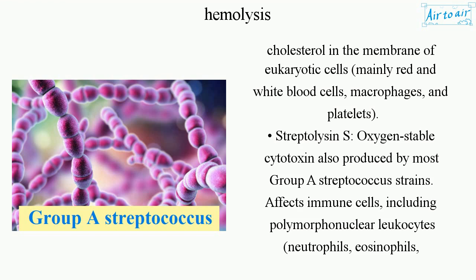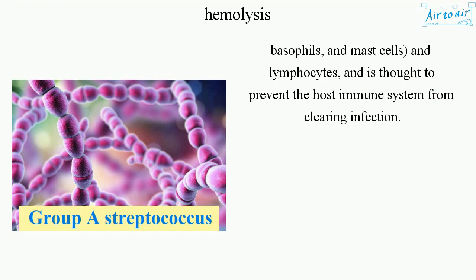Streptolysin S is an oxygen-stable cytotoxin also produced by most group A Streptococcus strains. It affects immune cells including polymorphonuclear leukocytes, neutrophils, eosinophils, basophils, mast cells, and lymphocytes, and is thought to prevent the host immune system from clearing infection.